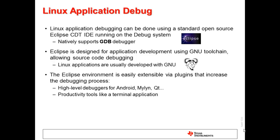GDB can be run from the command line. It can also be run from an IDE such as Eclipse, which has native support for GDB. Eclipse is designed for application development using the GNU toolchain, so it is an excellent environment for source level application debugging. Eclipse is also easily extensible through many third-party plugins that can greatly enhance the environment for Linux debugging, such as specific plugins for Android development or useful productivity tools like a terminal application or file system browser for the remote target.